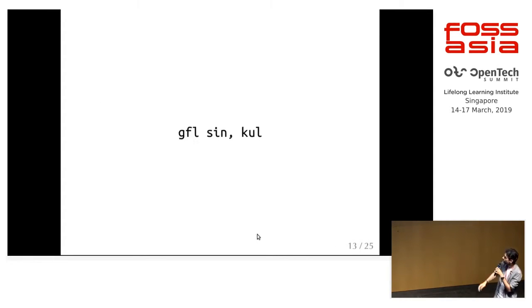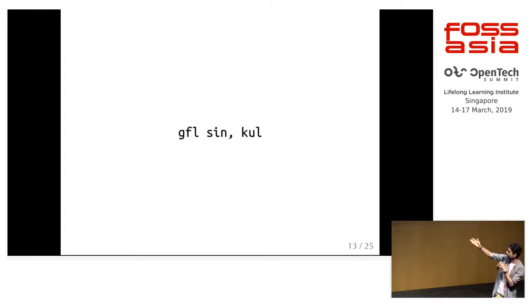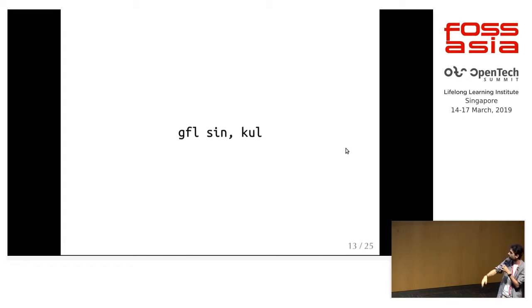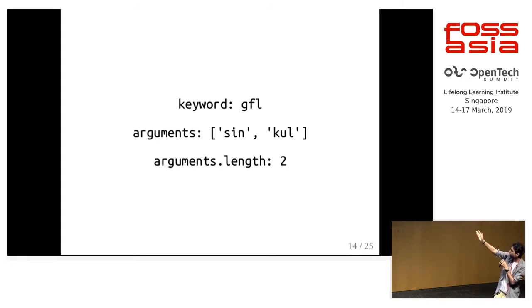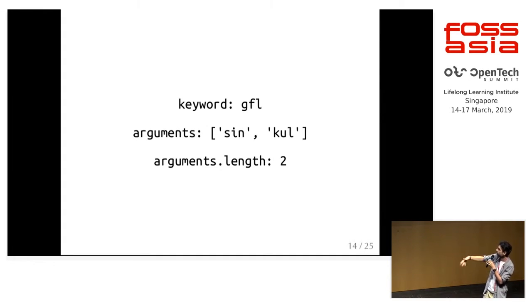Let's look at how this happens behind the scenes. A user types in 'GFL SIN,KUL'. It gets parsed into keyword 'GFL' and the arguments 'SIN' and 'KUL', so from that we have two arguments.